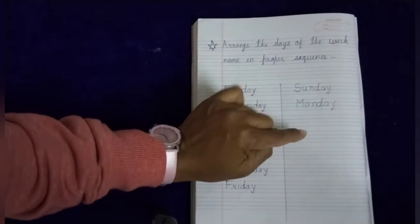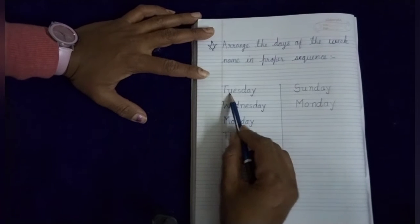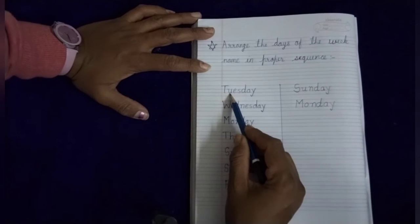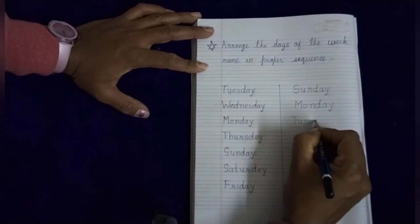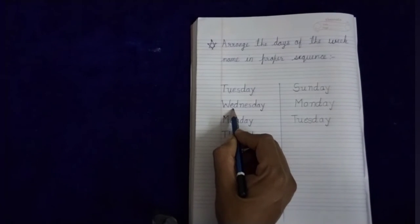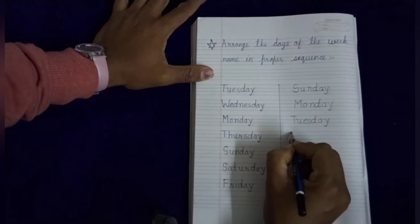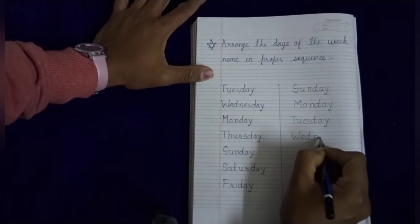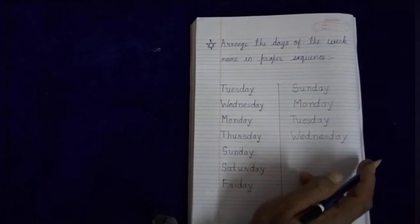Our next — Sunday, Monday, Tuesday. Tuesday is our third day. Where is the spelling of Tuesday? Is this Tuesday? Yes. The spelling of Tuesday is T-U-E-S-D-A-Y. Tuesday. So we write the spelling T-U-E-S-D-A-Y. Tuesday. Our fourth day is Wednesday. Where is the Wednesday? Is this Wednesday? No. Is this Wednesday? Yes, this is the spelling of Wednesday. W-E-D-N-E-S-D-A-Y. Wednesday. We write W-E-D-N-E-S-D-A-Y. Wednesday.